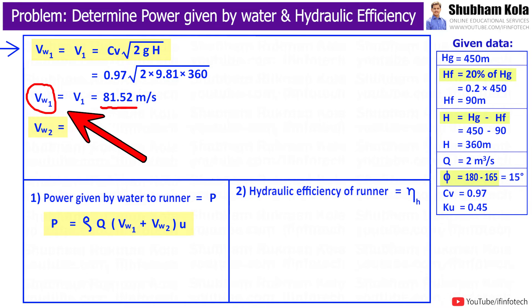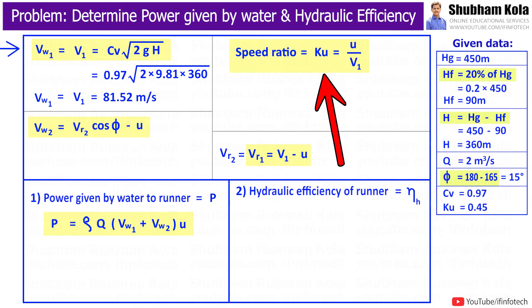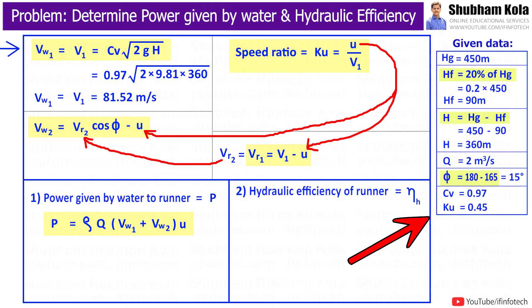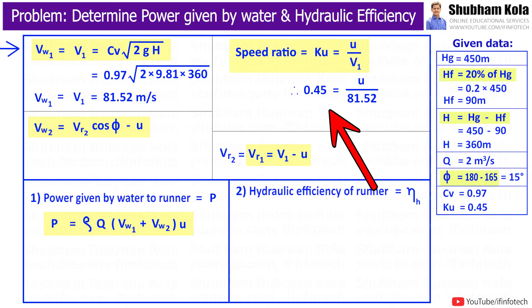Vw2 is given by formula Vr2 cos φ minus u. In the problem, they mentioned assume speed ratio as 0.45, and speed ratio equals the ratio of bucket speed u by velocity of jet V1. So here we will get value of u at 36.69 meters per second.